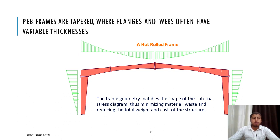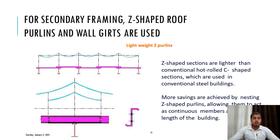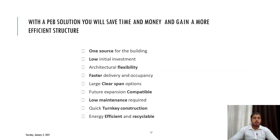For secondary framing, Z-shaped sections are lighter than the conventional hot-rolled C-shaped sections used in conventional steel buildings. What do we get from PEB? First, we can purchase the entire steel building from one source. It has low initial investment — you give your design requirements and receive the most economical design. With PEB, you can control the future of the building without compromising its appearance. It has low maintenance requirements, quick turnkey construction, and PEB construction is more energy saving and recyclable, which is not possible with concrete construction.